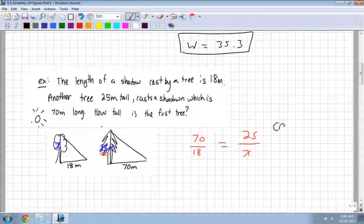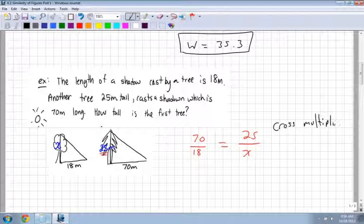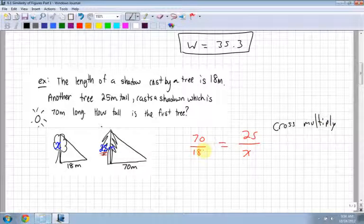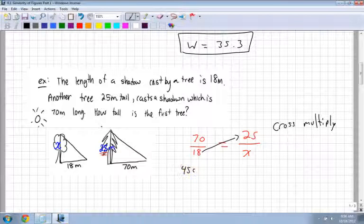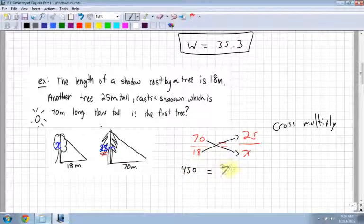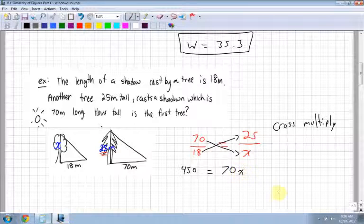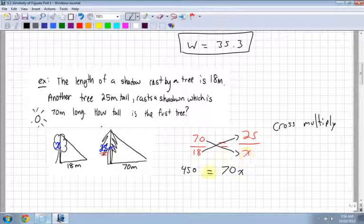To solve this I cross multiply. I can multiply 18 by 25. So 18 times 25 is 450, which equals 70 times x, which is 70x. Notice I could have started with the 70x first. I would have just had these reversed.